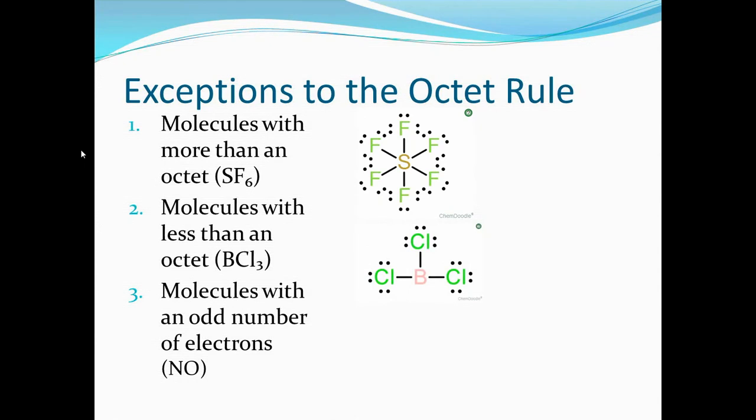Next we have molecules with less than an octet. Our example here is boron trichloride in which boron only has six electrons.